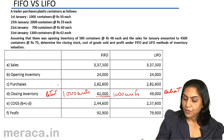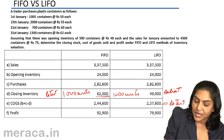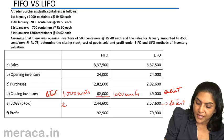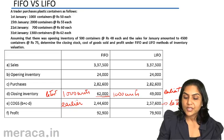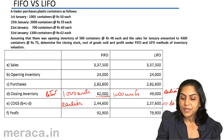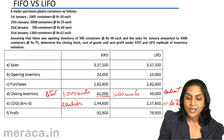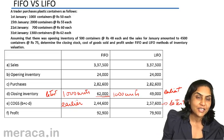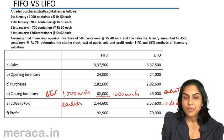Under LIFO the costs are the latest costs, whereas under FIFO they are the earlier costs. In our example, the prices were rising — the opening inventory was only 48, the first lot 50, then 55, 60, and 62.